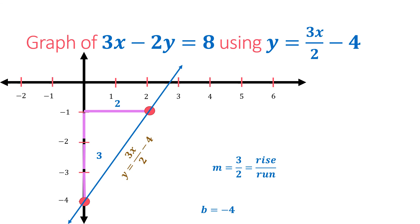That line is named as y equals 3x over 2 minus 4, or also known as 3x minus 2y equals 8. That is the graph of the line.